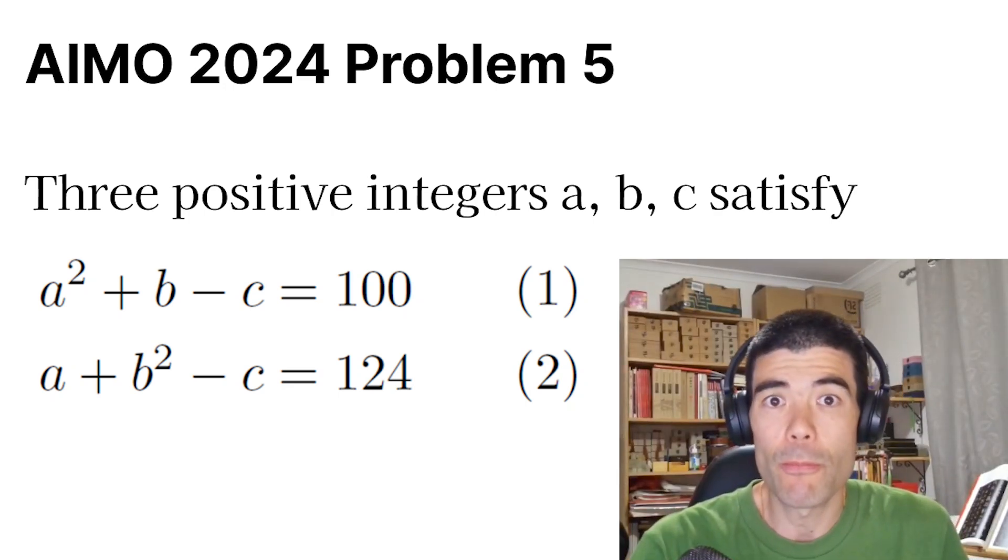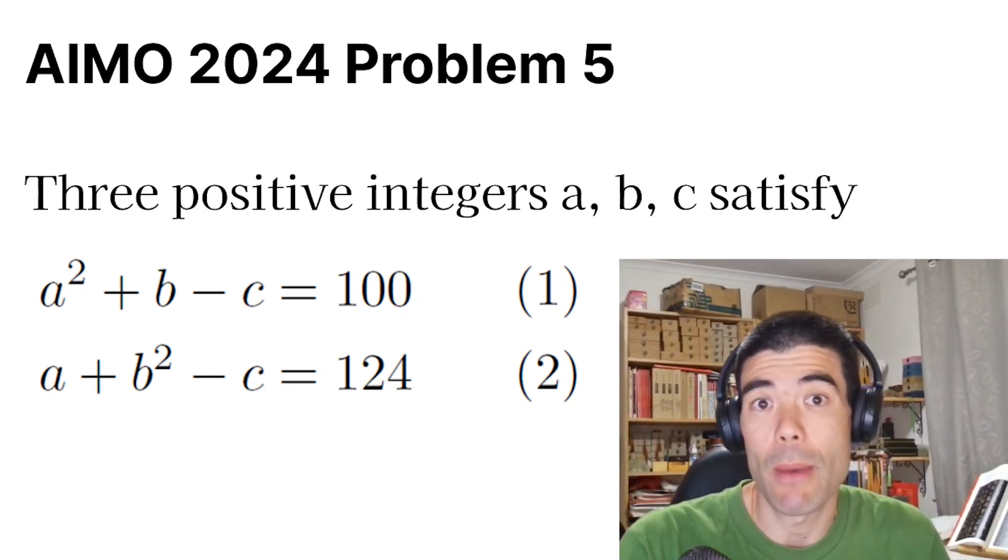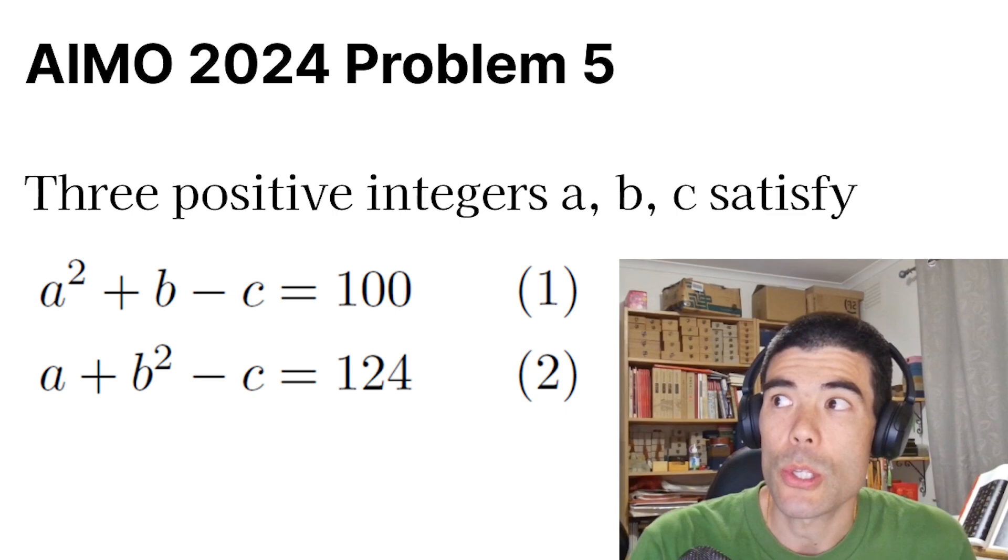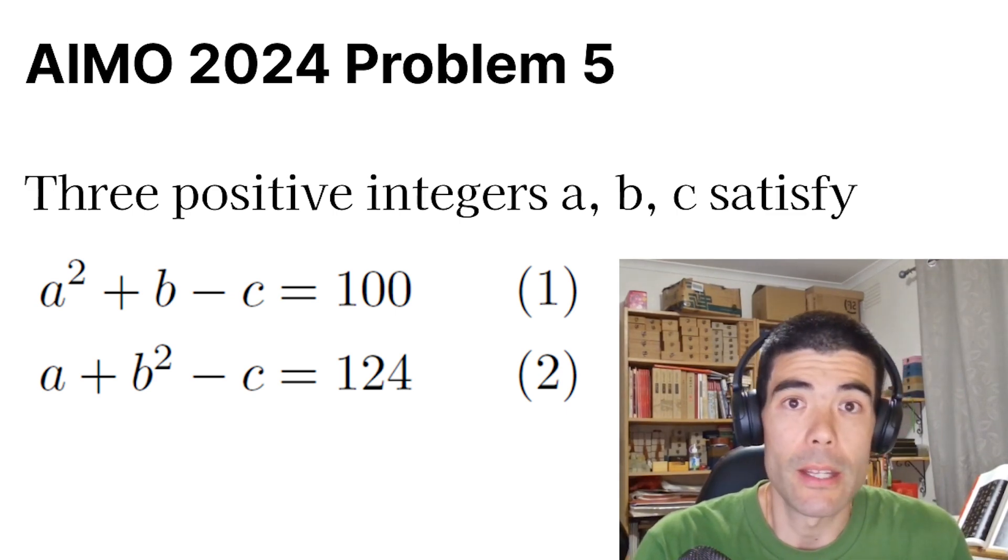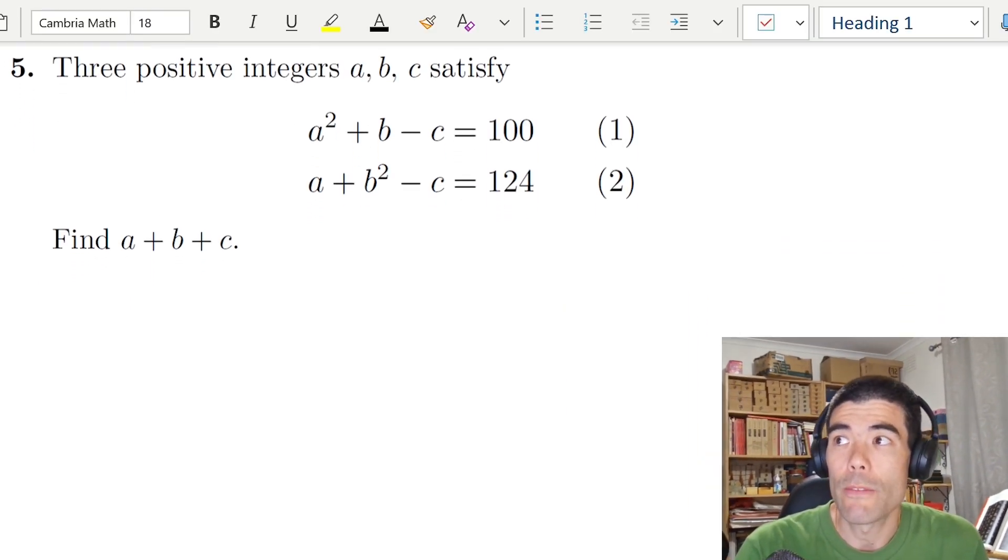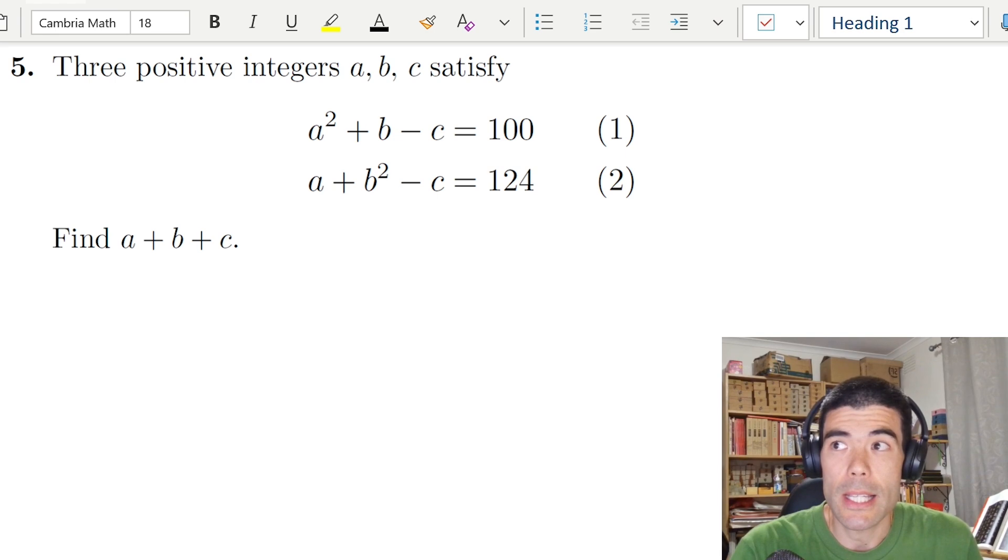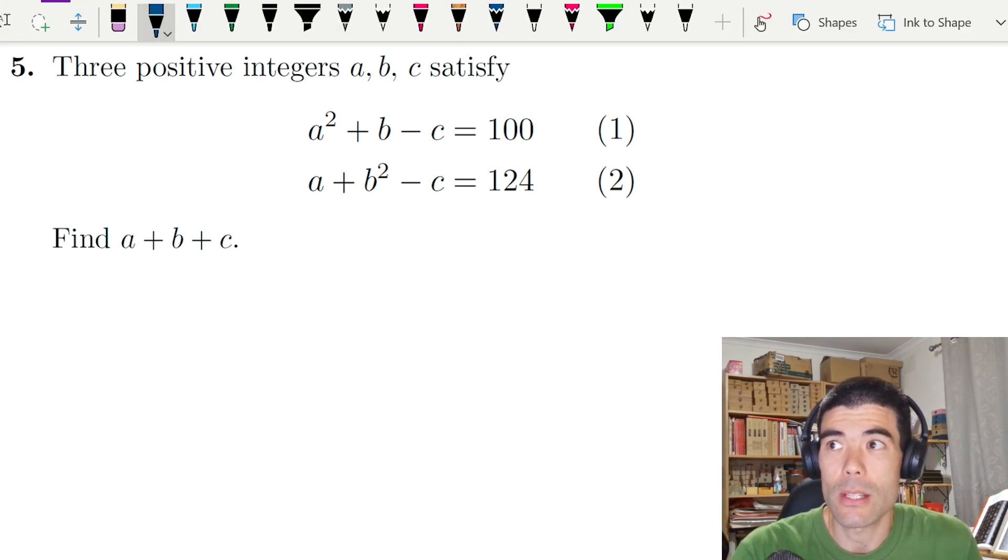This is a nice little algebra problem from the Australian Intermediate Mathematics Olympiad 2024. It's question 5 out of 10 in this four-hour Olympiad. We're looking for three positive integers a, b, and c that satisfy both of these equations. Then we have to find a plus b plus c.